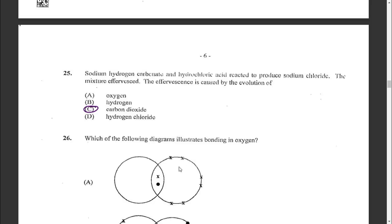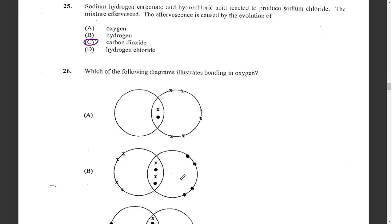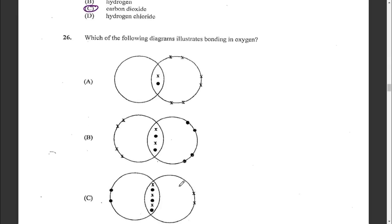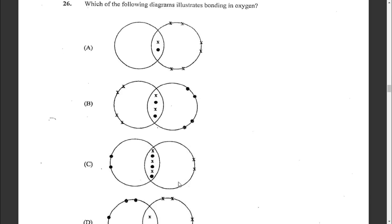Question twenty-six: which diagram illustrates bonding in oxygen? Oxygen has six electrons in its outer shell and needs two more. When one oxygen combines with another oxygen, it forms a double bond. Two electrons from one oxygen atom combine with two electrons from the other oxygen atom to give a double bond — each pair of electrons represents one bond. The answer is B.